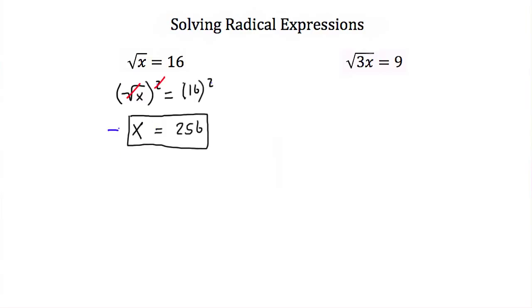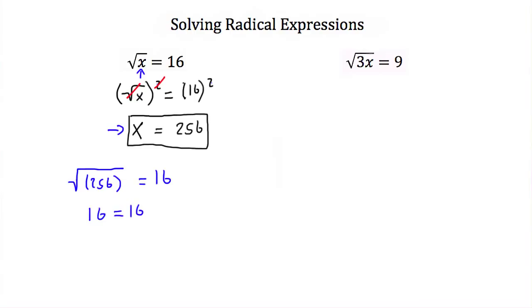To check our answer, we're going to take x = 256 and plug it back into our original equation. We'll have the square root of 256, and that's supposed to equal 16. The square root of 256 is 16, so we have 16 is equal to 16, which means x = 256 is a valid solution for this equation.